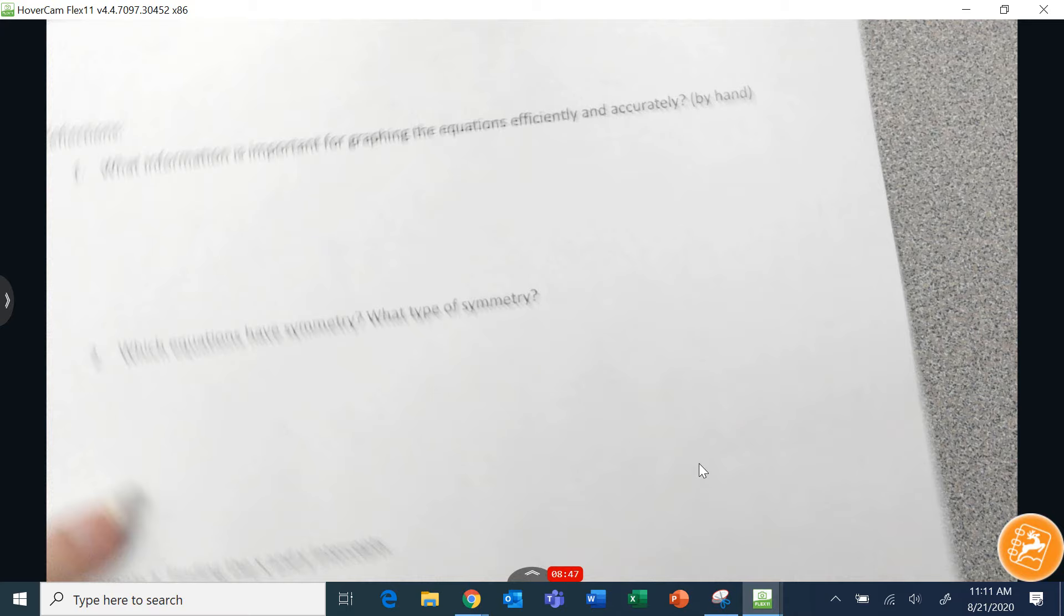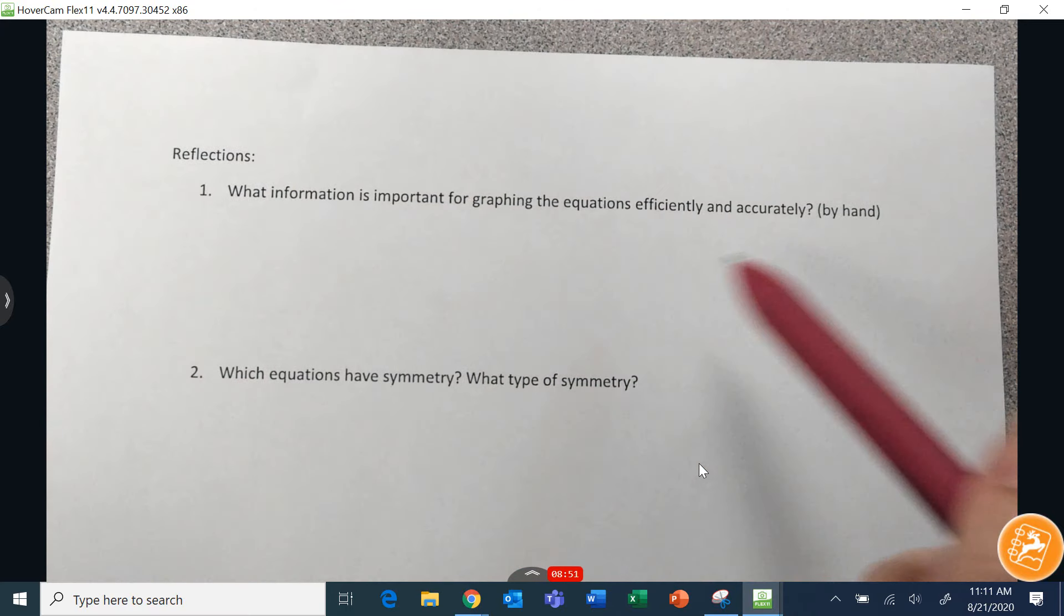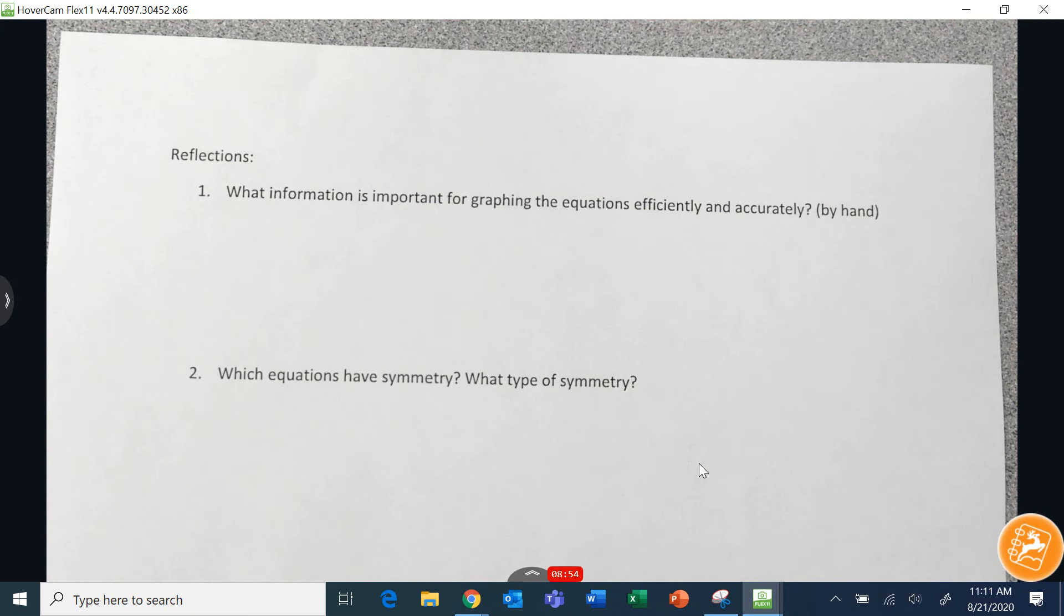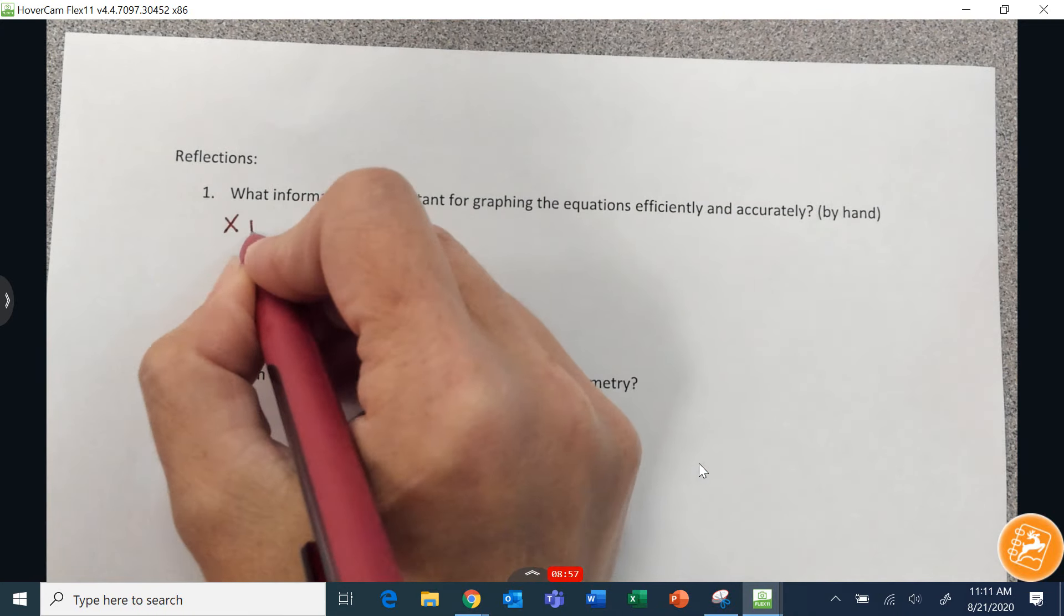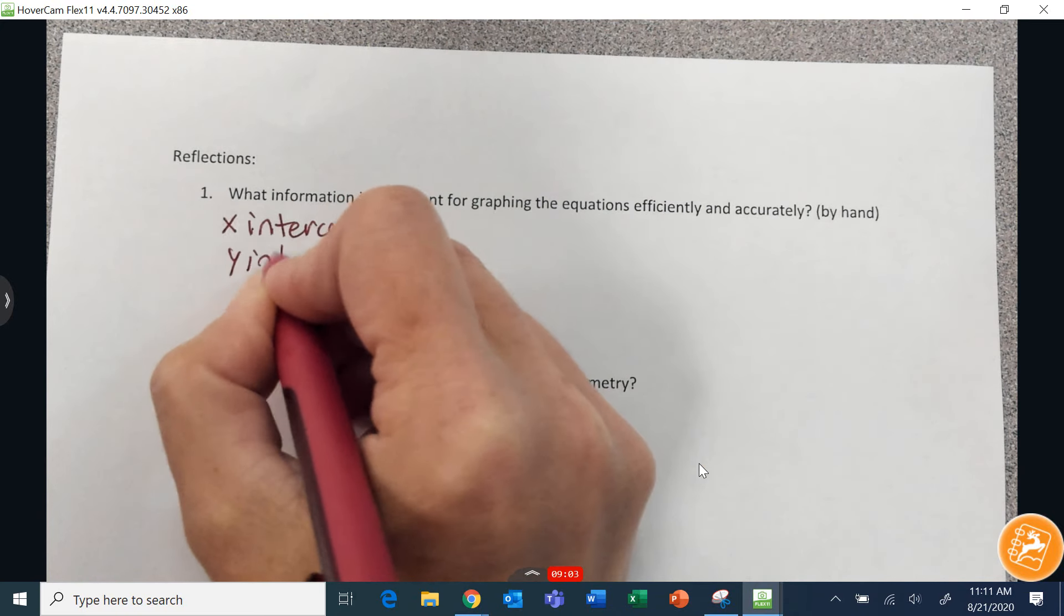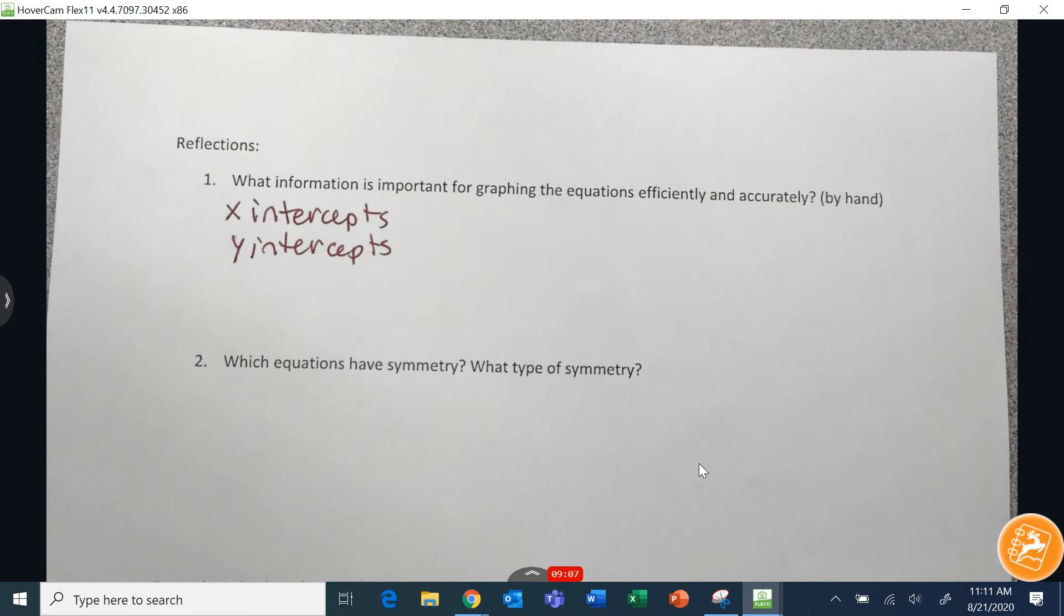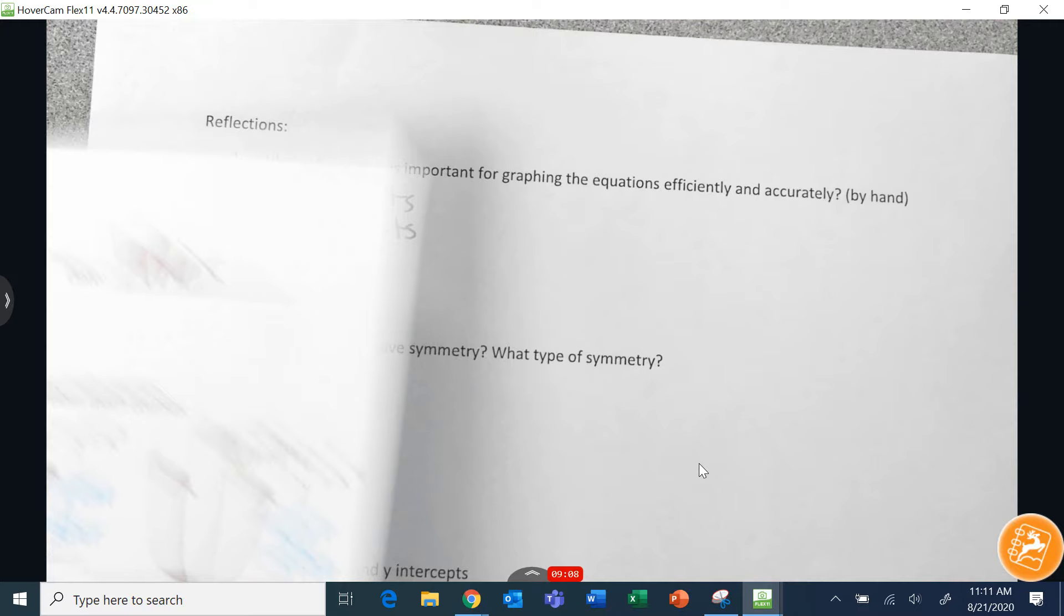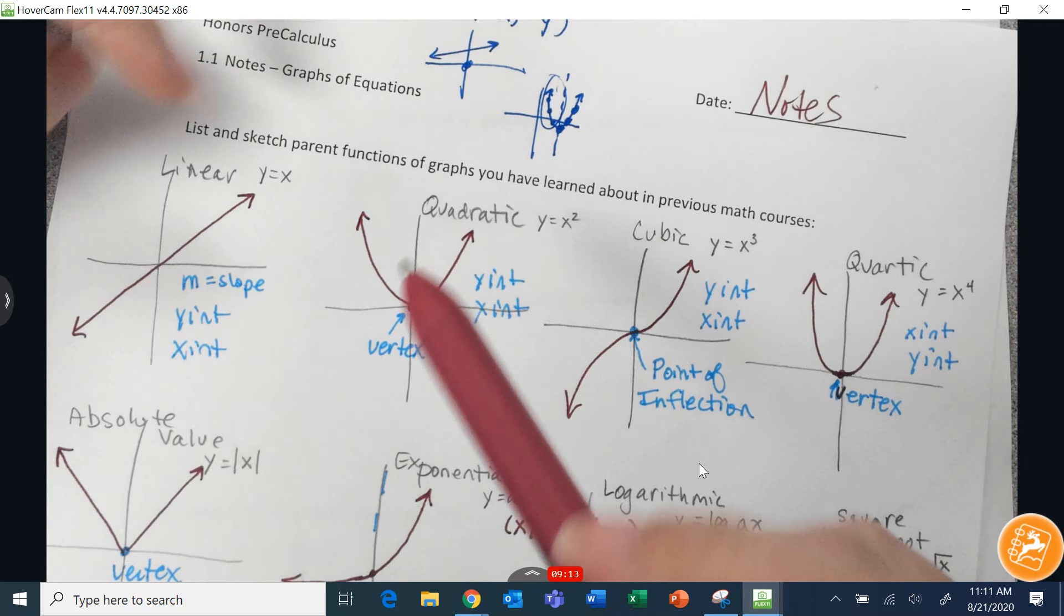So on this second page, what information is important for graphing equations efficiently and accurately by hand? So I would say for every single graph, we have x-intercepts, y-intercepts, and then one more thing I didn't really quite talk about. I'm going to pull my graphs over here and talk about it for a second. We'll look at the front row. End behavior.